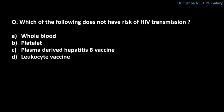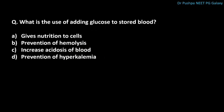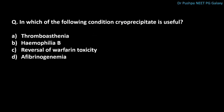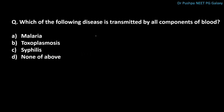Which of the following does not have risk of HIV transmission? The correct answer is plasma-derived hepatitis B vaccine. What is the use of adding glucose to stored blood? It gives nutrition to the cells. In which condition is cryoprecipitate useful? The correct answer is reversal of warfarin toxicity. Which disease is transmitted by all components of blood? The correct answer is malaria.